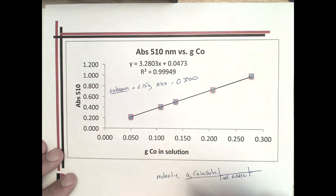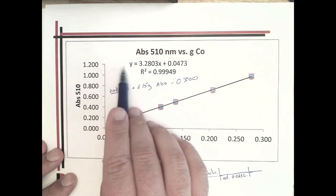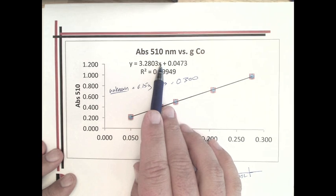Then what you'd have to do is first determine how many grams of cobalt that corresponded to, and then you could figure out the mass percent. If you had 0.3, that would be the y, so you would just substitute 0.3 into this equation and solve for x.